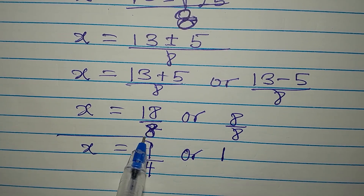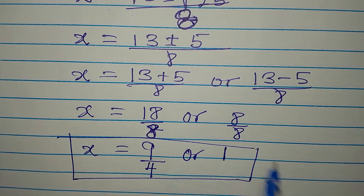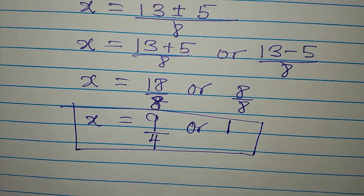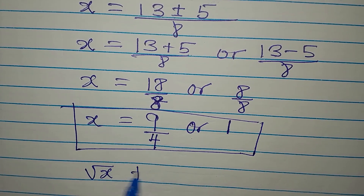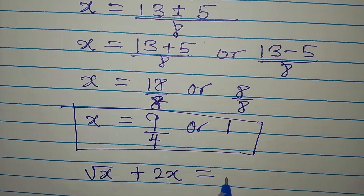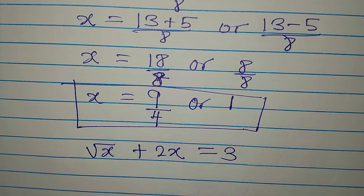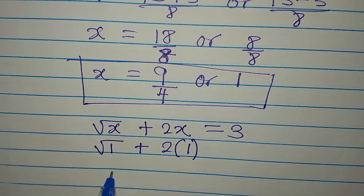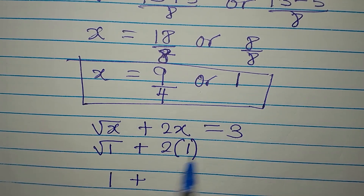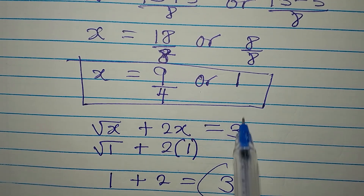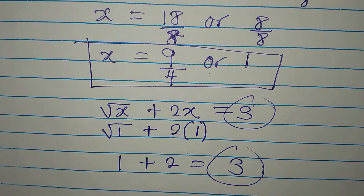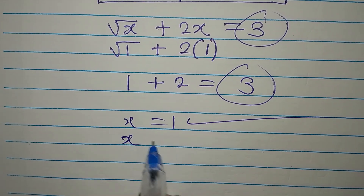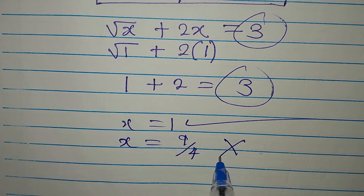Now, which of these solutions do we pick? Remember, the given equation is not a quadratic equation, so the answer should be one solution. The equation is square root of x plus 2x equals 3. Let's test x equals 1 first. We have square root of 1 plus 2 times 1: square root of 1 is 1, plus 2 times 1 is 2, and that equals 3. So x equals 1 satisfies the equation, and x equals 9 over 4 does not satisfy it.